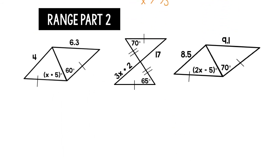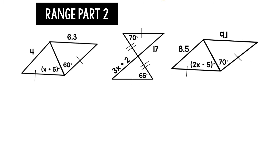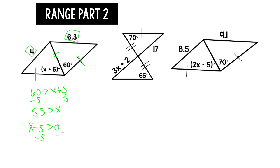Let's do some more. We have one side congruent to each other and one congruent to itself. The side lengths are 4 and 6 plus 3 — 6 plus 3 is bigger. So we know angle 60 is going to be greater than X plus 5. Solving gives 55 greater than X. We also know X is an angle so it must be greater than 0, giving X greater than negative 5. Putting it all in a compound inequality: negative 5 is less than X is less than 55, with all signs facing the same way.